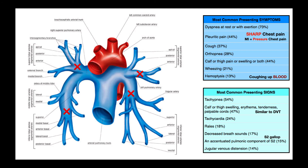In this video we're going to be talking about the signs and symptoms of pulmonary embolism, and then we're going to end by talking about the Wells criteria for predicting the likelihood of a pulmonary embolism. In a past video we did talk about the Wells criteria for deep vein thromboses — this is a different Wells criteria. You do have to be careful which Wells criteria you're looking at: is it for a DVT or a PE?